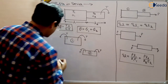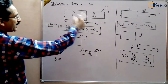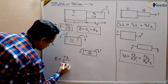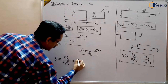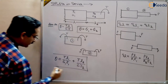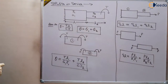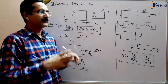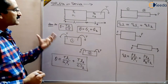So the total angle of twist theta of the entire shaft will be T L upon G J of the first part of the shaft plus T L upon G J of the second part of the shaft, and this will be the total angle of twist of the entire shaft. This is how questions on shafts in series will be solved, and later we will solve numericals on this. You have to apply TL/GJ plus TL/GJ in this way.